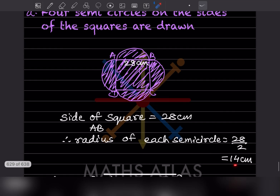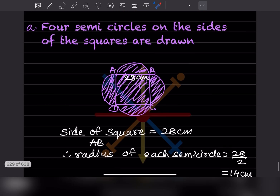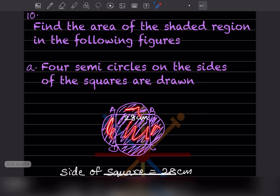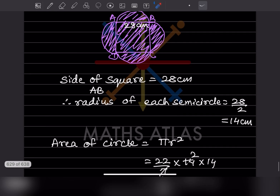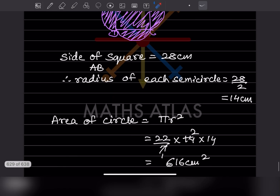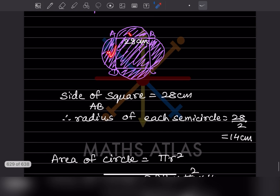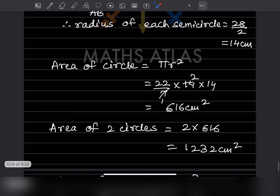The radius of each semicircle is 28 ÷ 2 = 14 centimeter. Area of one circle = πr² = (22/7) × 14 × 14 = 616 centimeter square. Since there are two circles, area of two circles = 2 × 616 = 1232 centimeter square.